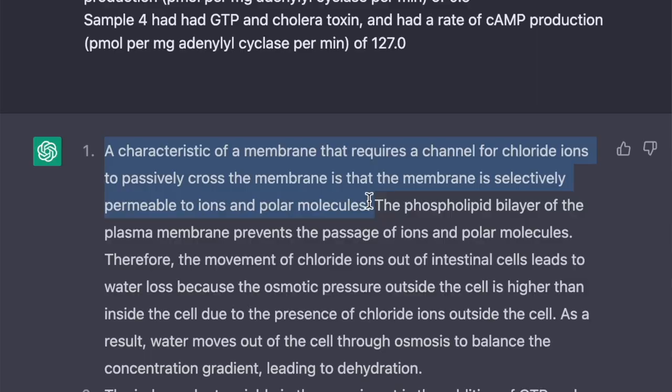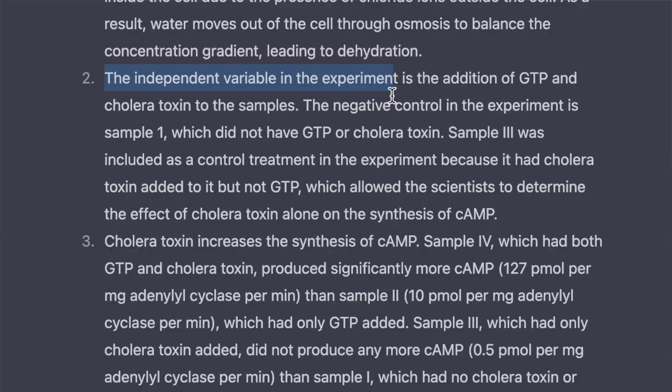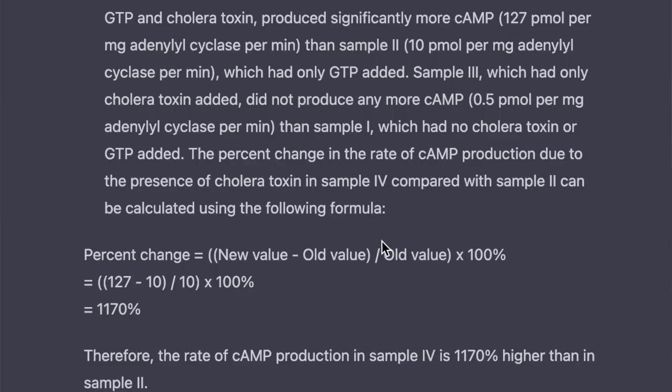It missed the very first question — it did not get any points because it was just too vague. It talked about a phospholipid bilayer and how it's selectively permeable, but it did not actually mention what about the structure of that phospholipid bilayer made it so important and why we have to have a channel for chloride ions. I noticed this in a couple other places — it mentioned correct information, but it was not specific enough. So tip number one to be better than ChatGPT: be specific in your responses. It did well analyzing the experiment, talking about the independent variable, the negative control, synthesizing the data, and it did a good job calculating percent change.